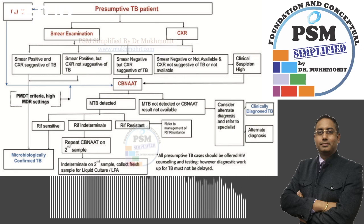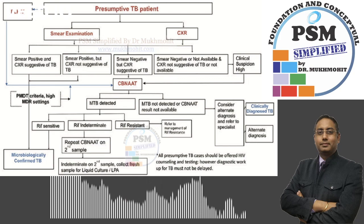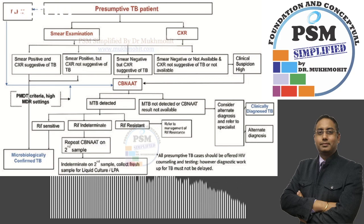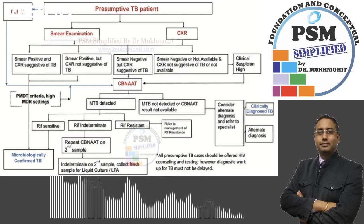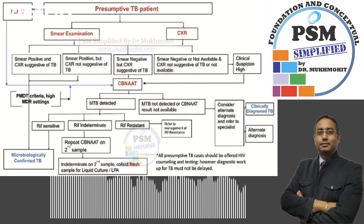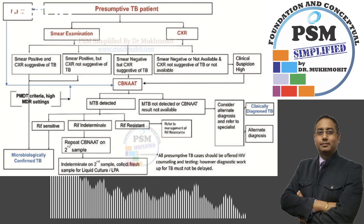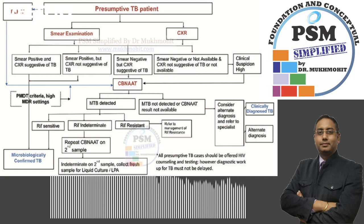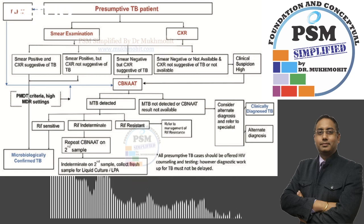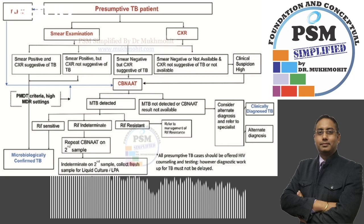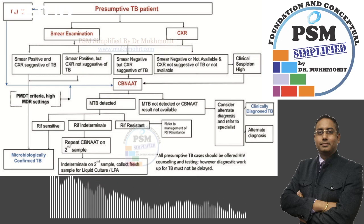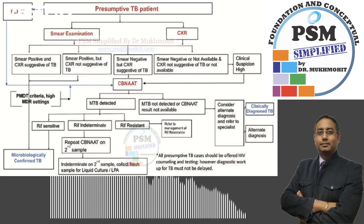Two specimens are collected — a spot specimen and an early morning specimen — and they should be at least one hour apart. A smear is made from both samples, and if any one of them is positive, the patient is diagnosed as a microbiologically confirmed pulmonary TB case.